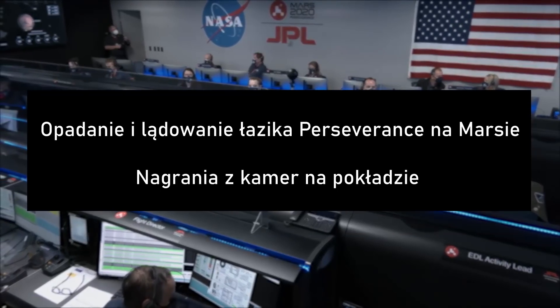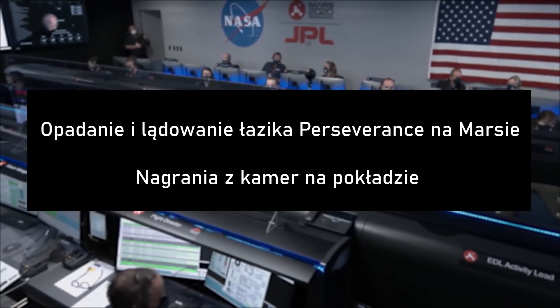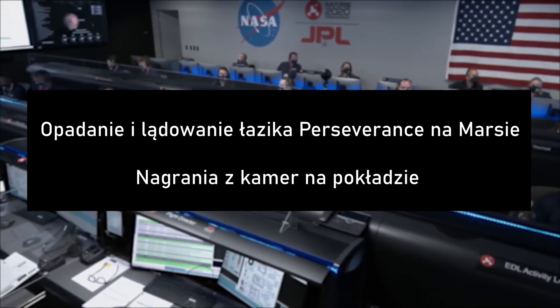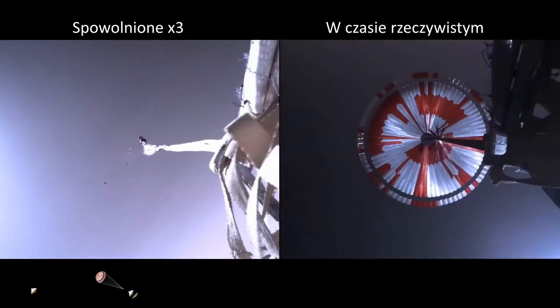We are starting the Straighten Up and Fly Right maneuver, where the spacecraft will jettison the entry balance masses in preparation for parachute deploy and to roll over to give the radar a better look at the ground. Parachute deployed.